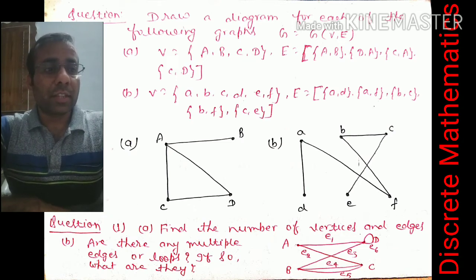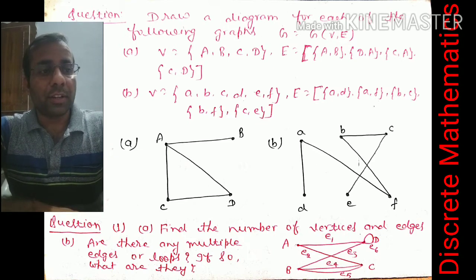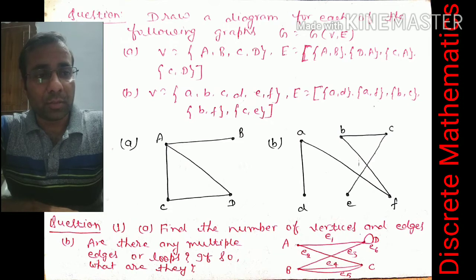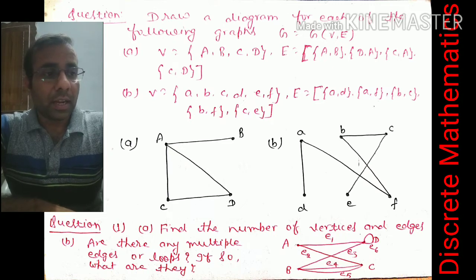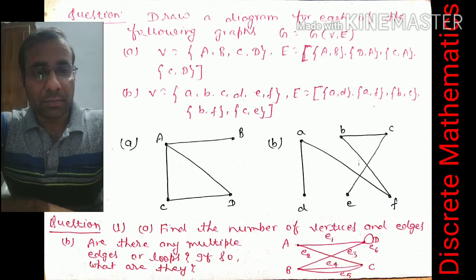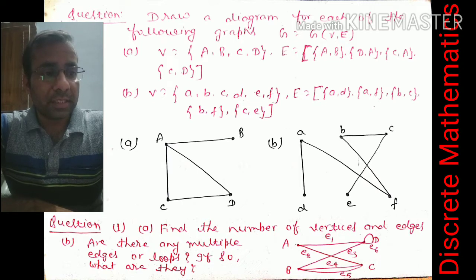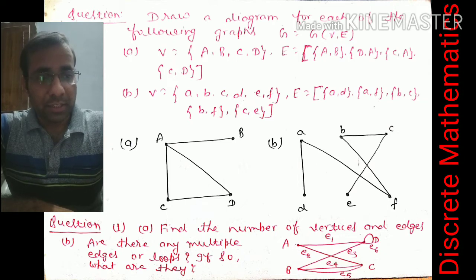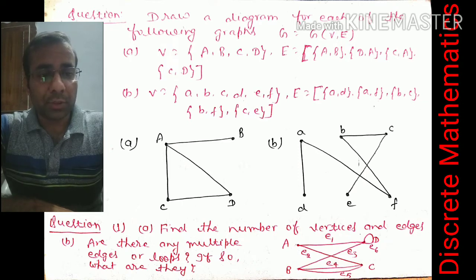Draw a diagram for each of the following graphs. First: G = G(V, E) where V = {A, B, C, D} and E = {(A,B), (D,A), (C,A), (C,D)}. Second: V = {A, B, C, D, E, F} and E = {(A,D), (A,F), (B,C), (B,F), (C,E)}. For the first graph we connect A to B, A to C, A to D, and C to D. For the second we connect A to D, A to F, B to C, B to F, and C to E.